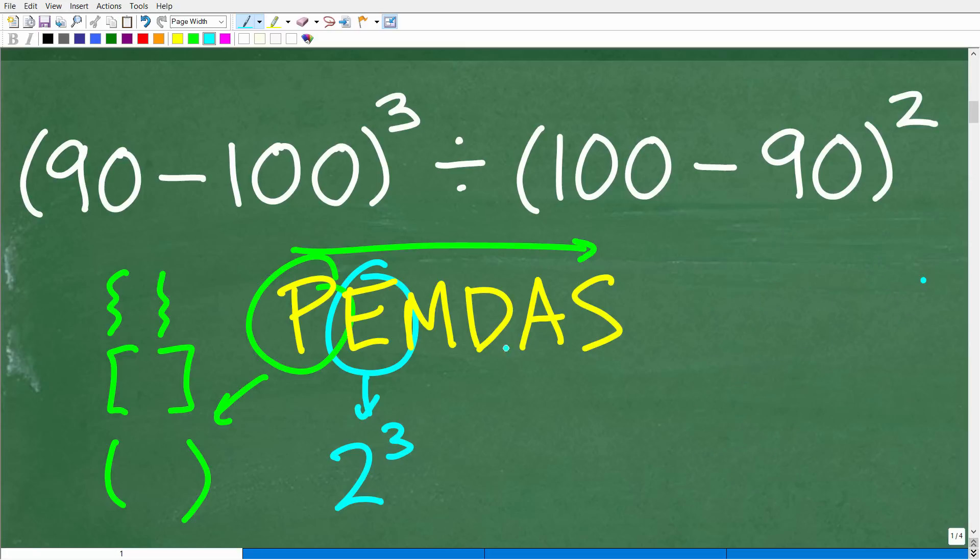Of course, we're going to have some powers in this problem. Okay, so M, D, A, and S. M stands for multiplication, D is division, A is addition, and S is subtraction.